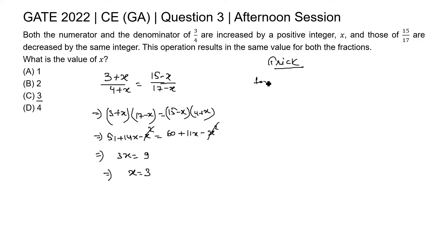If we put 1, 3 plus 1 that is 4 by 4 plus 1, 5. 15 minus 1 is 14 by 17 minus 1, 16. This is 7 by 8. 4 by 5 and 7 by 8 is not equal, so this option is wrong.